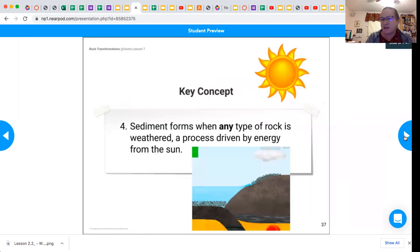So remember at the beginning, I said we're going to talk about it more in detail. Here we go. So the key concept number four: sediment forms when any type of rock, any type of rock is weathered, a process driven by energy from the sun. Hopefully that makes sense, right?